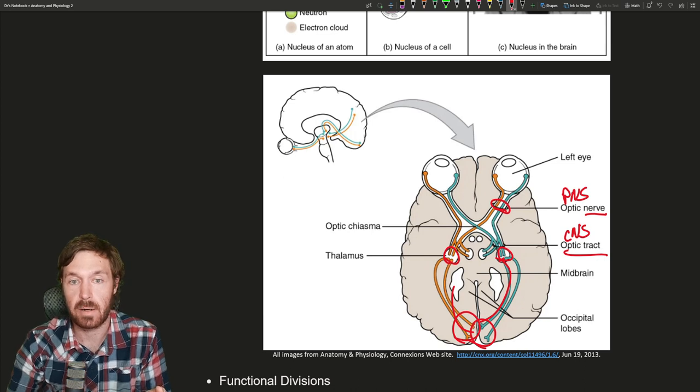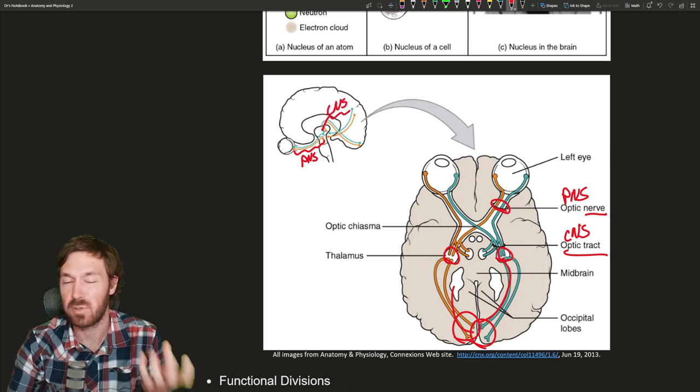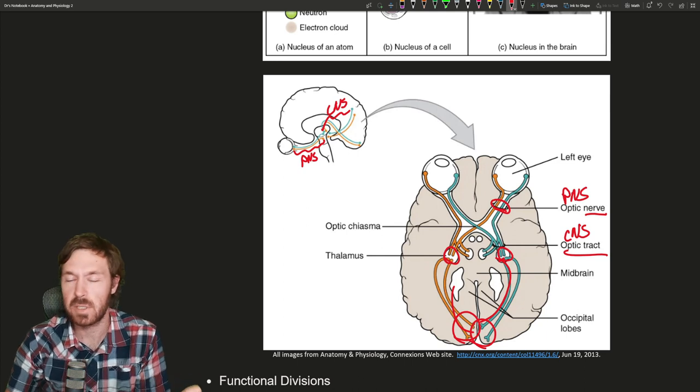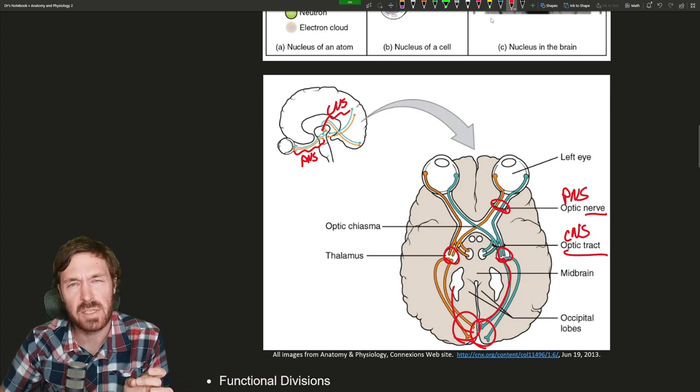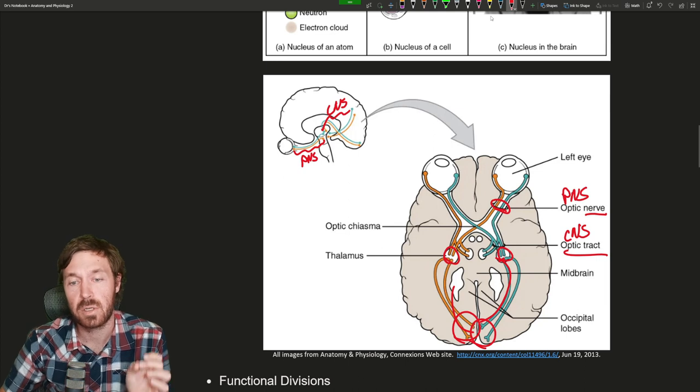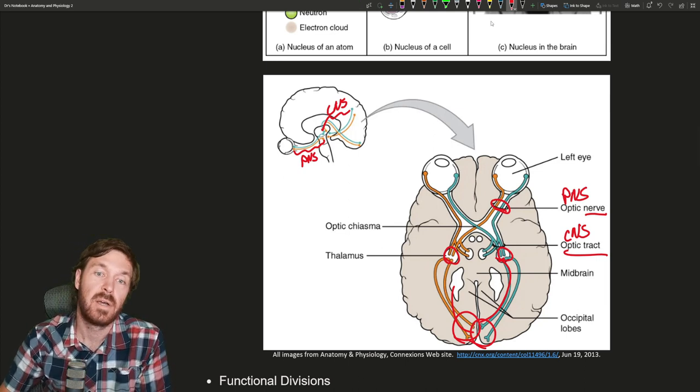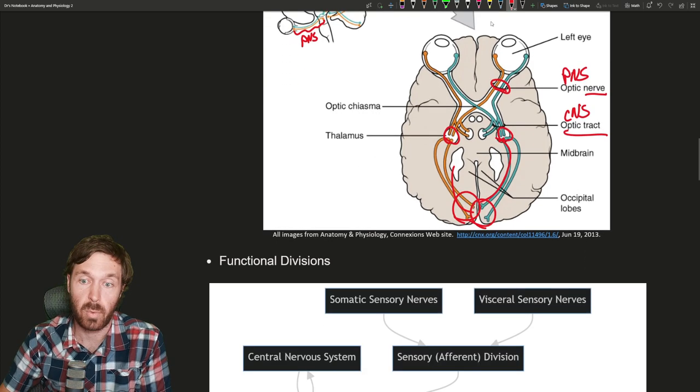It travels back eventually to the occipital lobes here where vision is processed. You can see here it's peripheral nervous system, and then in here it's central nervous system. Those are cranial nerves we talked about. The optic nerve is cranial nerve two. Just wanted to highlight the difference when you see the word nerve versus tract. It's a bundle of axons traveling together - terminology varies on where it is.